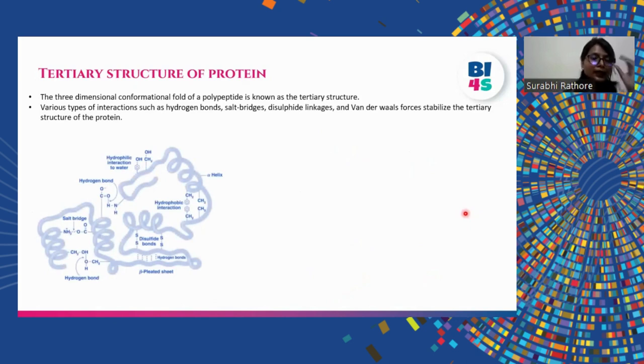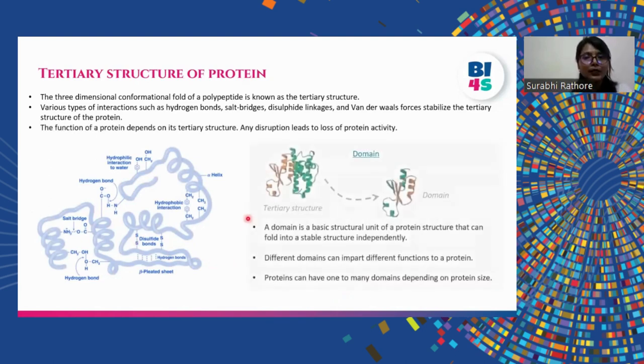So, the tertiary structure of a protein is a three-dimensional shape which is stabilized by various interactions, such as hydrogen bonds, salt bridges, hydrophobic interactions, disulfide bonds, etc. It is interesting to note that the protein function depends on its tertiary shape or structure. This function is often performed by domains. Now, what is a domain?